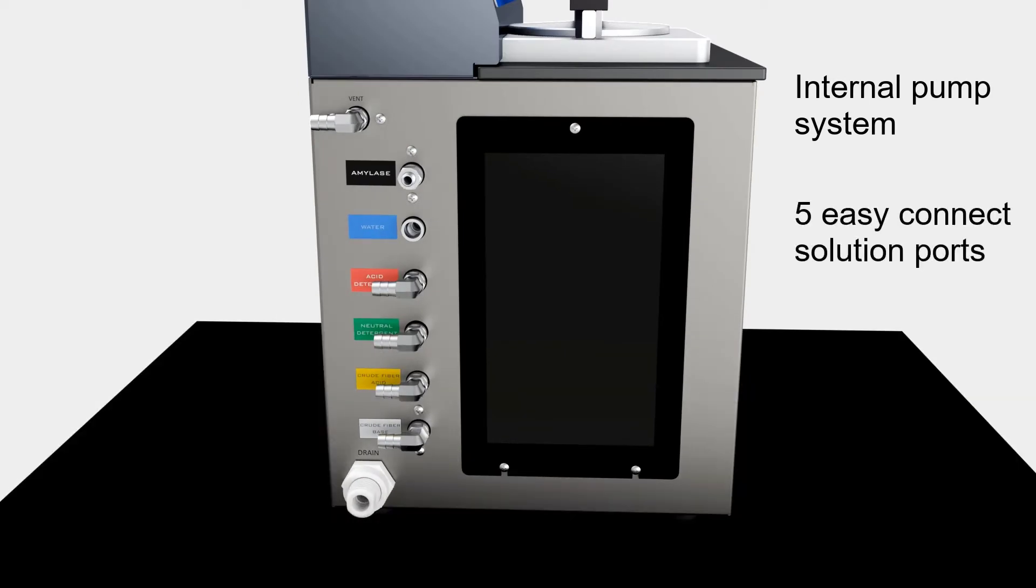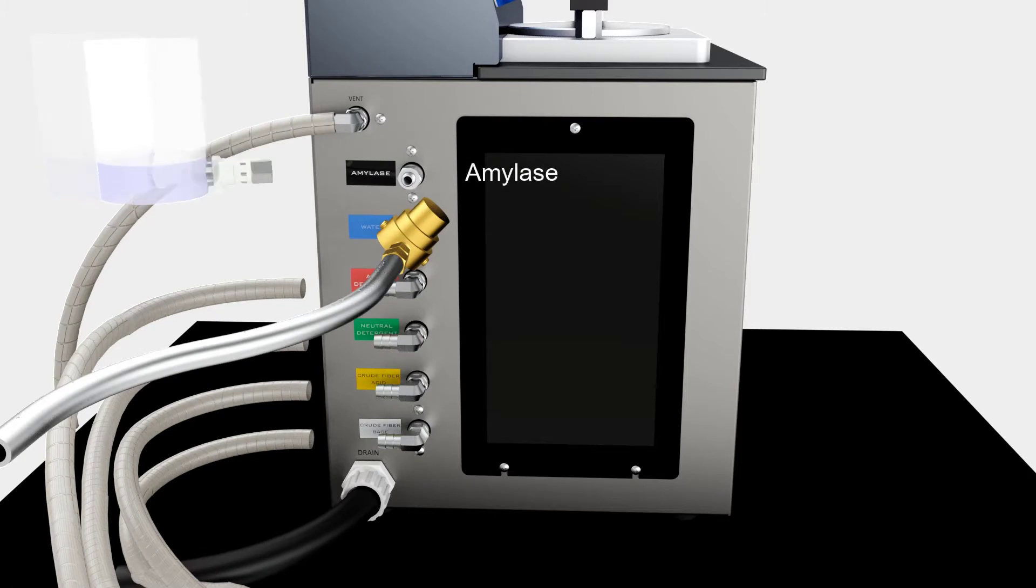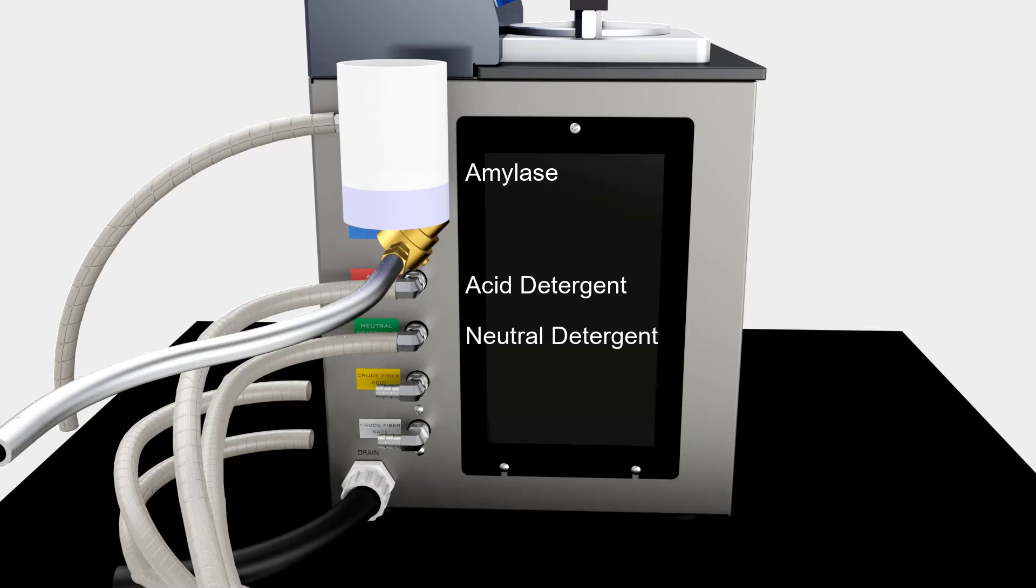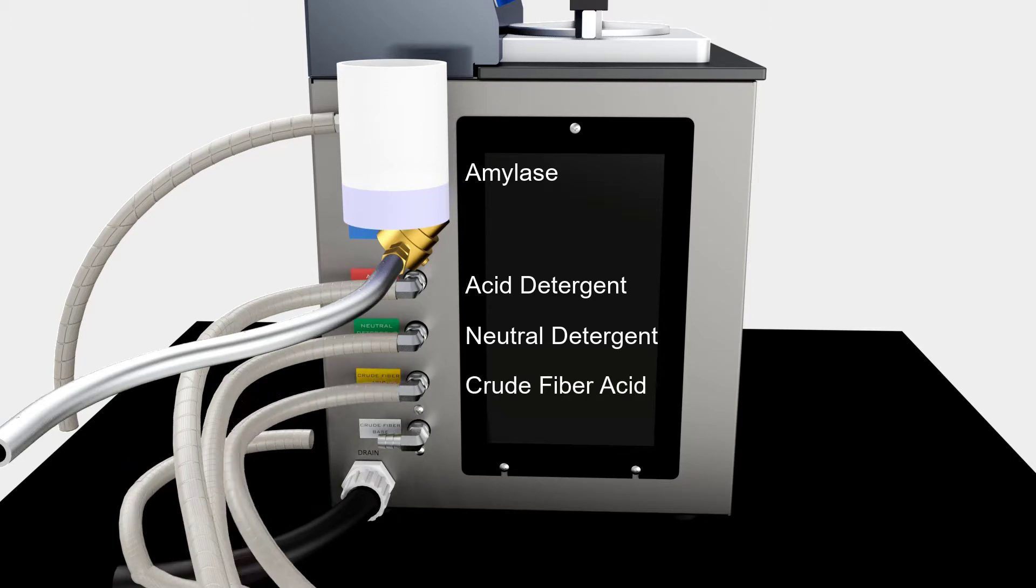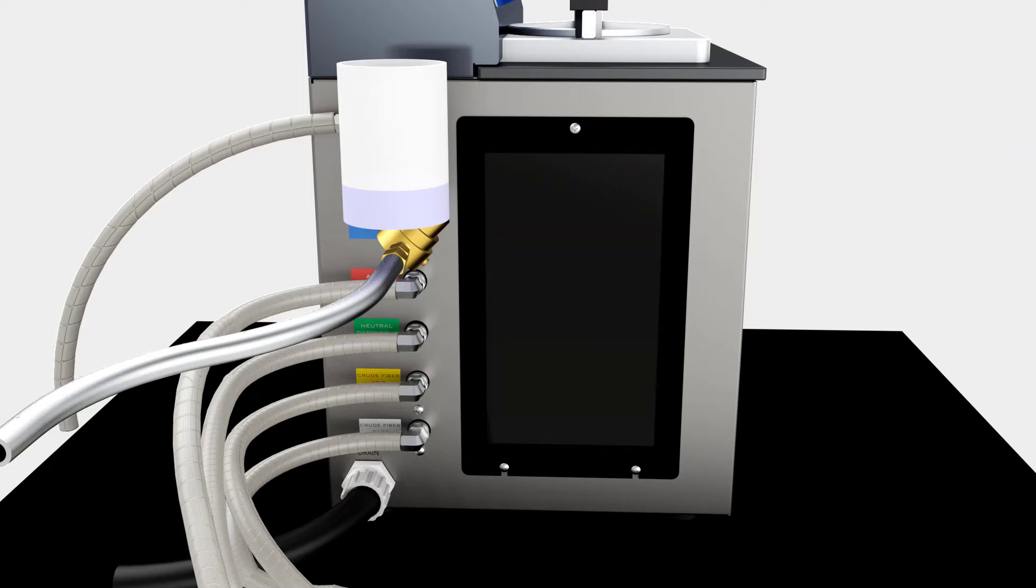Five easy-connect solution ports include amylase acid detergent, neutral detergent, crude fiber acid, and crude fiber base. The addition of a transparent side access panel simplifies periodic maintenance and allows the user easy visual access to the internal pumping system.